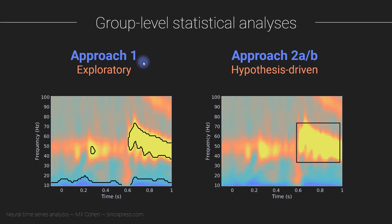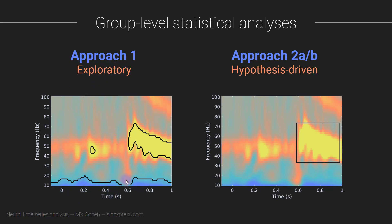So, those are two families of approaches for doing group-level statistical analyses. It is possible to combine them or to apply both, which is something I do very often in my own research. I start with the hypothesis-driven regions of interest, do those statistical analyses, and then come back to the same time-frequency maps and apply Approach 1 for exploratory analyses. I like this combined approach because I'm a big fan of methodological convergence — seeing the same results pop out with different analysis procedures — and I also think it's interesting to be open to exploratory, data-driven discovery even when I have specific hypotheses guiding my analysis.